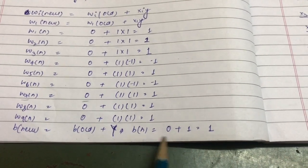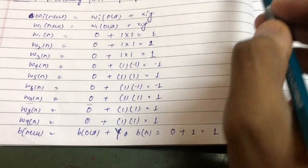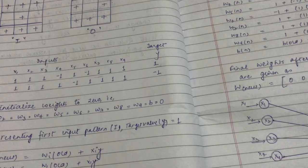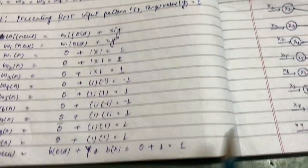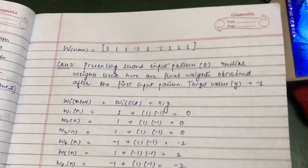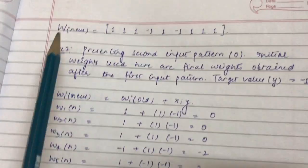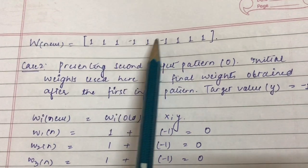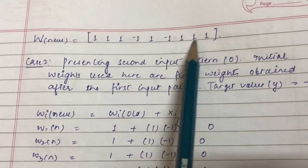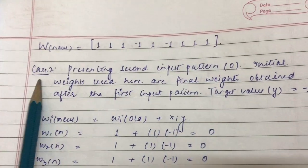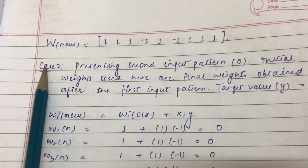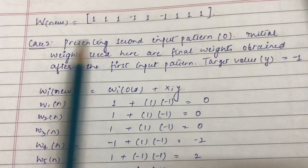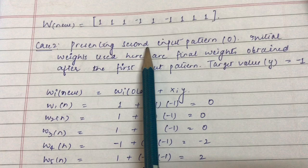The bias update: b_new = b_old + y. Since b_old is 0 and target value y is 1, b becomes 1. After processing pattern I, the weight matrix is: 1, 1, 1, minus 1, 1, minus 1, 1, 1, 1.